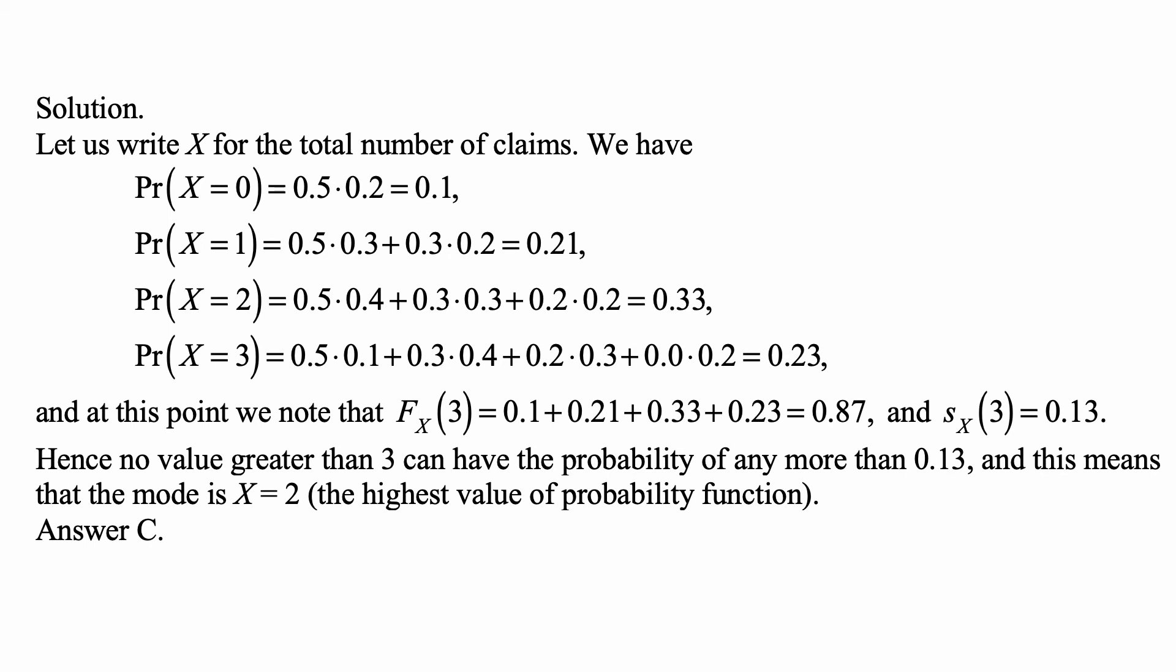And the answer is that there can't be, because at this point, the cumulative distribution function at 3 is the sum of these probabilities: 0.1 plus 0.21 plus 0.33 plus 0.23, so it's 0.87, so that the survival function at 3, the probability of X is more than 3, is 0.13. So all these values of 4, 5, and 6 combined have probability of 0.13, so none of them can be as large as 0.33.